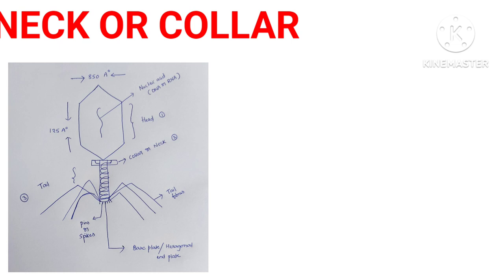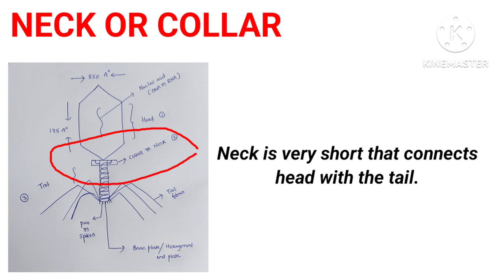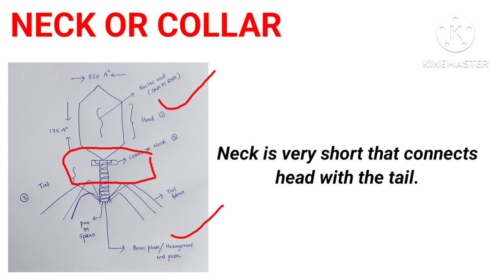Coming to the second main part of a Bacteriophage, that is the neck. This neck portion we can also call it as collar. It is a very short region of a Bacteriophage which connects the other two main parts, that is the head and tail.